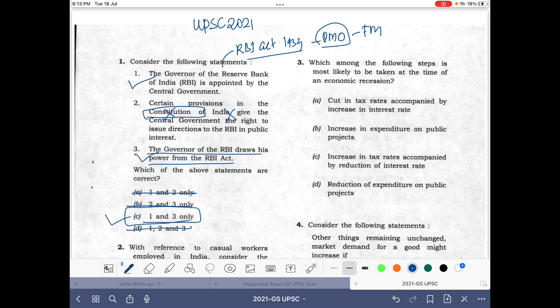The authority to issue directions to the Governor of RBI flows from the RBI Act 1934. The Constitution does not give this authority to the central government. Statement number three - the Governor of RBI draws his power from... this question is obviously correct, so question two is incorrect.